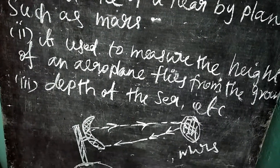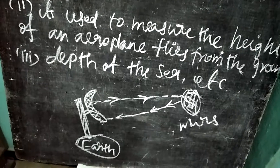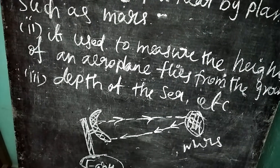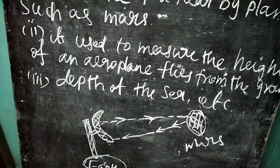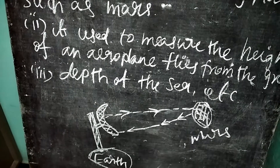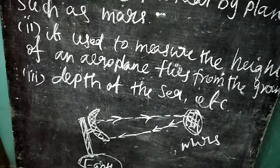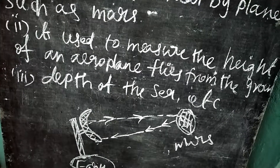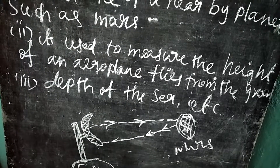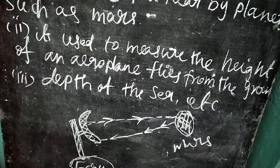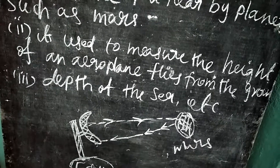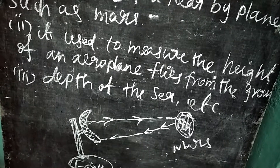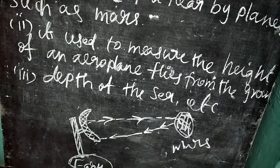For example, we are going to measure the distance between the Earth and Mars. An antenna is fixed on the surface of the Earth. The antenna acts as both a transmitter and a receiver. Transmitter means sending the signal, and receiver means receiving the signal after it reflects back.